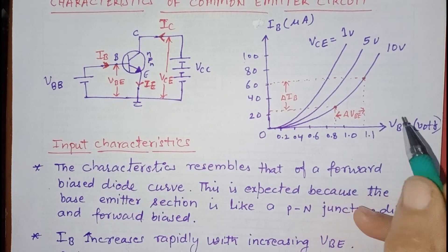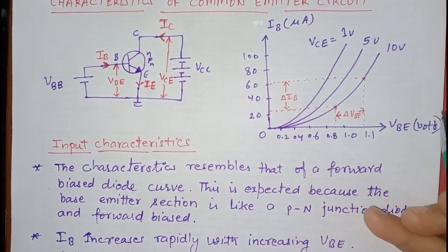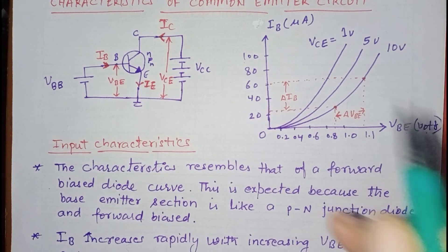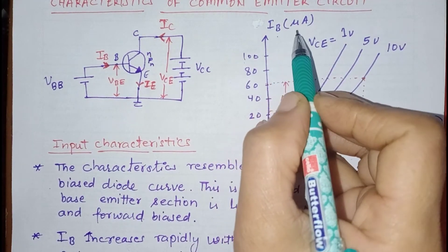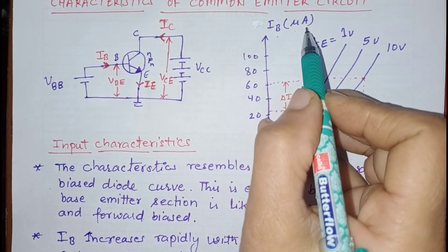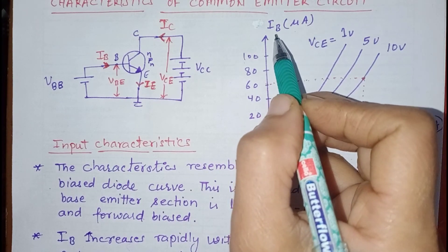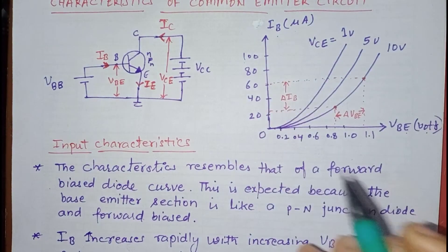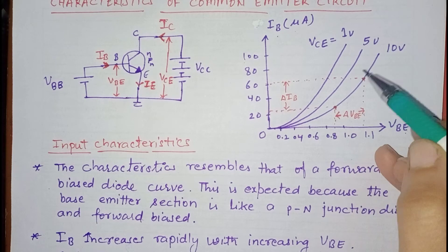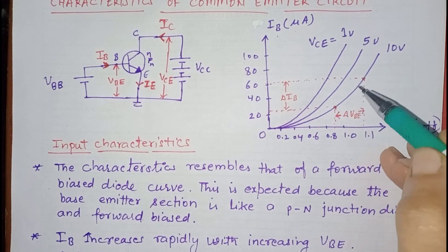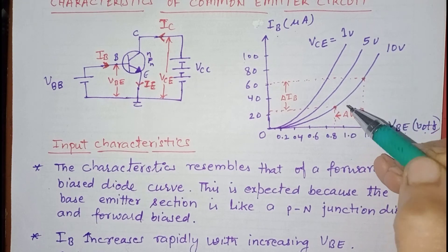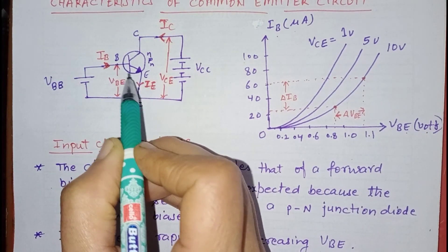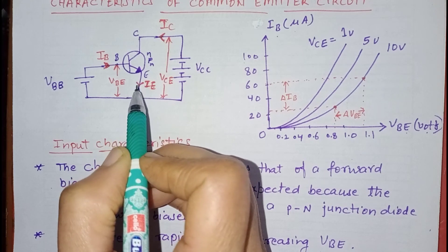Now we will analyze the input characteristics of the common emitter configuration. The x-axis shows VBE in volts and the y-axis shows IB in microamperes. IB is in microamperes because the base current is very small, as the base region is very thin and lightly doped. The shape of these curves is very similar to a forward-biased diode because the base-emitter junction is forward biased and acts like a PN junction diode.